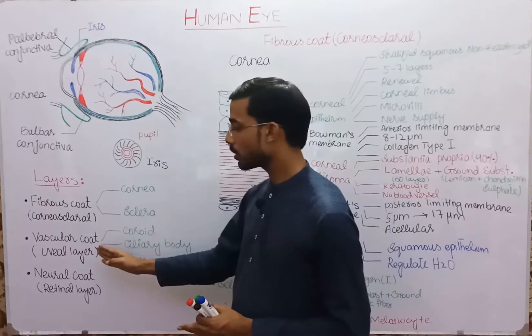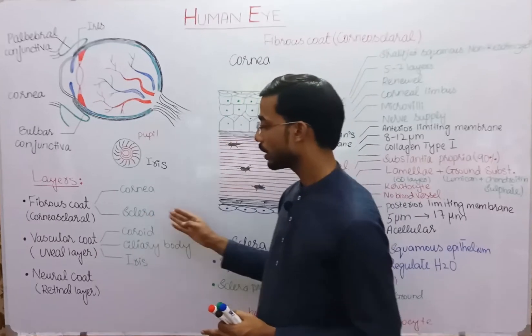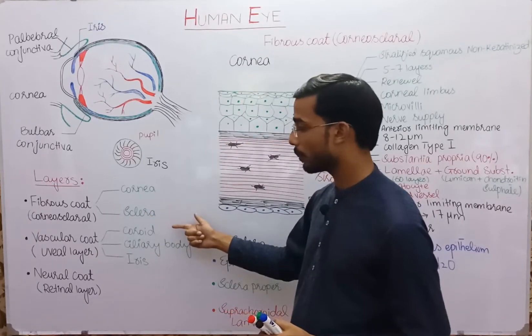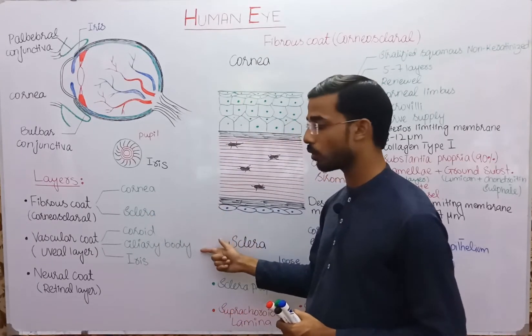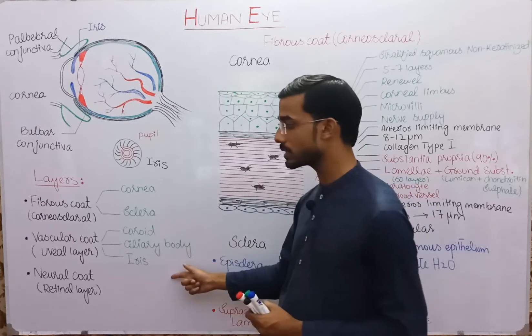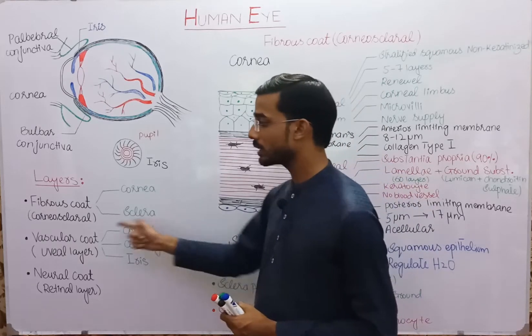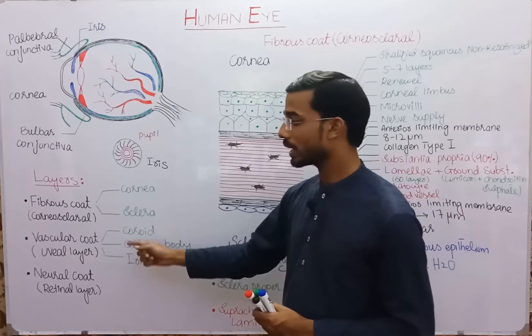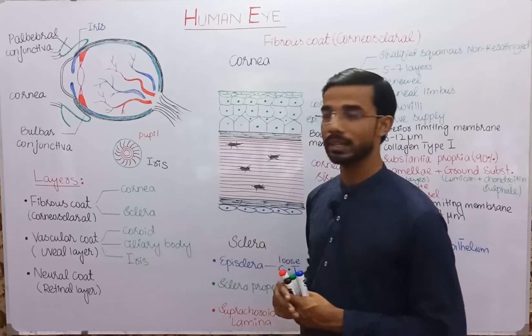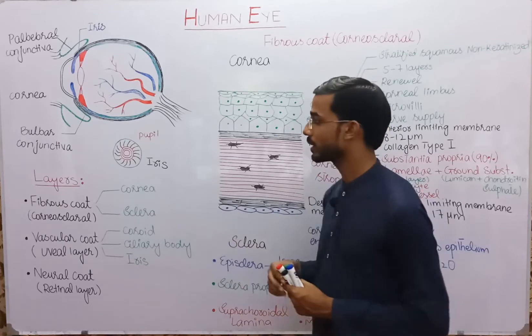The vascular cord has three components: choroid, ciliary body, and iris — also called the uveal layer. The neural cord's another name is the retinal layer.